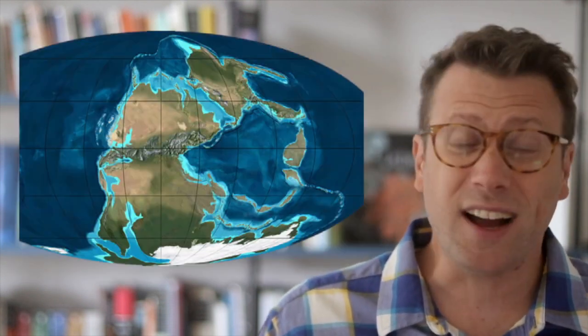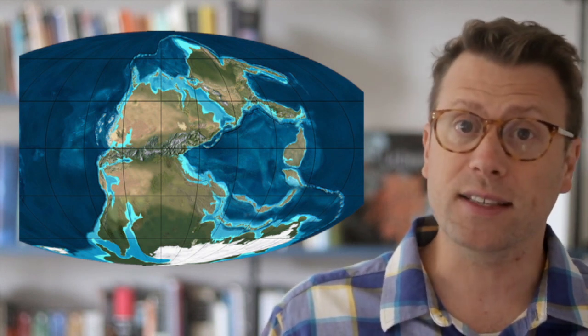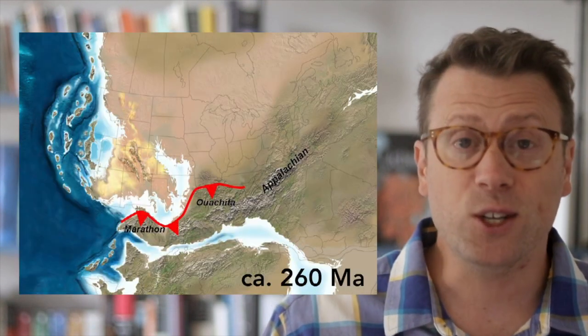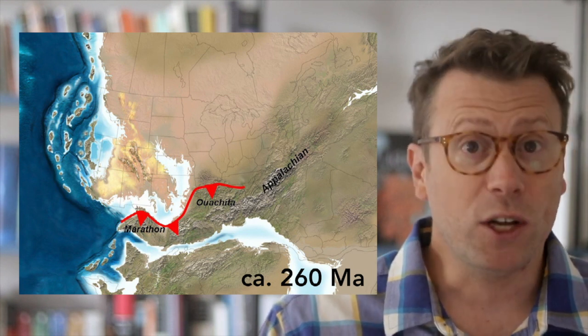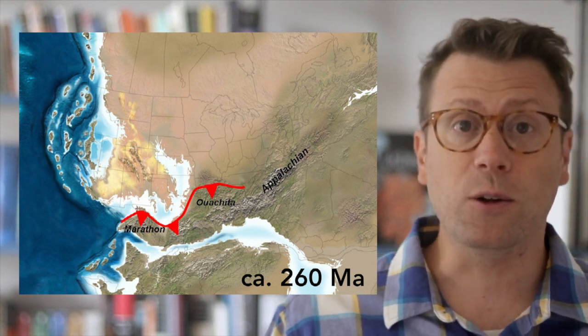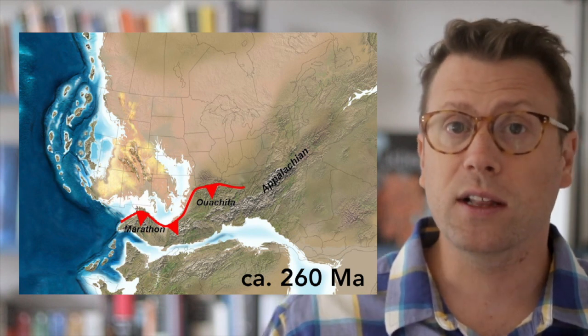The Permian Basin formed during the time of Pangaea, when all the continents were smooshed together. The collision of the North American and South American plates during the formation of Pangaea created the Ouachita-Marathon Orogenic Belt — a southern extension of the Appalachian Mountains. The Ouachita-Marathon Belt is exposed in Arkansas, Oklahoma, Texas, Coahuila, and Chihuahua. The mountain belt pushed the North American plate down and created a flexural foreland basin.